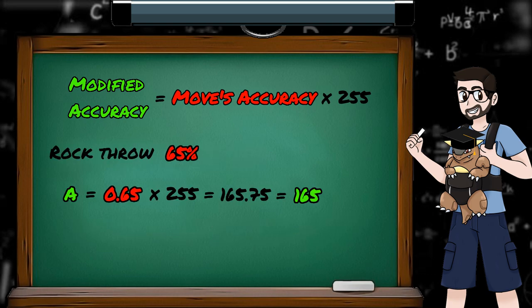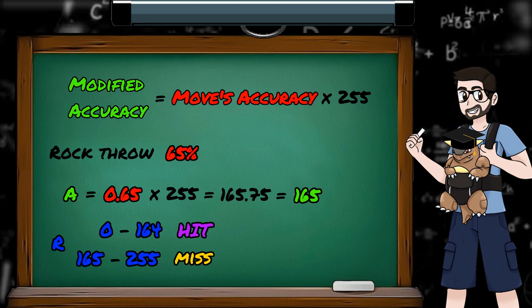Looking at the move Rock Throw, as an opportunity for me to correct the mistake I made in my damage calculation video, Rock Throw has an accuracy of 65% in Generation 1. This means our modified move accuracy is 0.65 times 255, which is 165.75. But as we always round down to whole numbers, this is actually 165. Thanks to the rounding down, and the fact that our random number has 256 possible values, most moves are actually a little less accurate than they say they are, as Rock Throw has a 165 in 256 chance to hit, which is 64.4%. The random number is generated, and if the value is less than 165, Rock Throw lands. If it's equal to 165 or greater than 165, we miss.